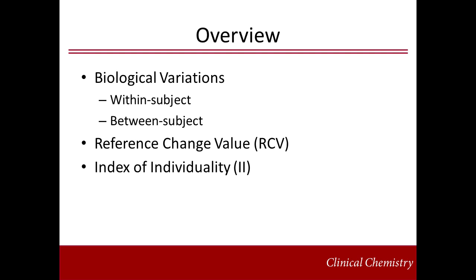In this lecture, I would like to start with the definitions of two types of biological variations — within-subject and between-subject variations — and explain how they are determined. I will use a case study to illustrate the situations in which the concept of reference change value (RCV) and index of individuality (II) may be helpful. Then I will show you how to calculate RCV and II using biological variations.